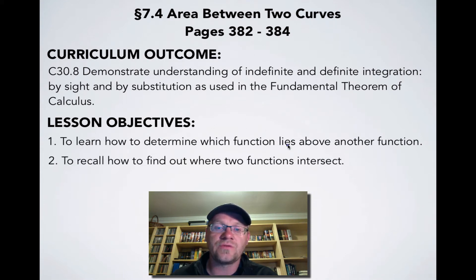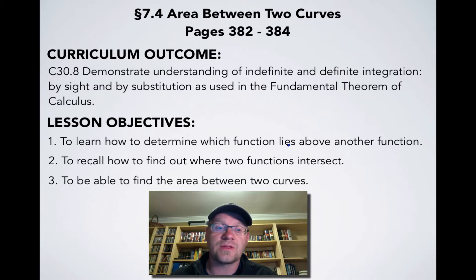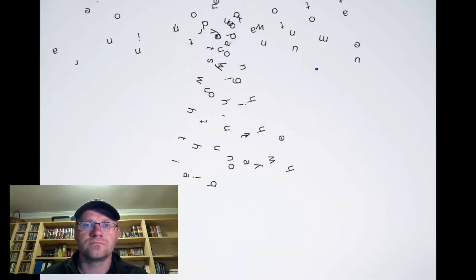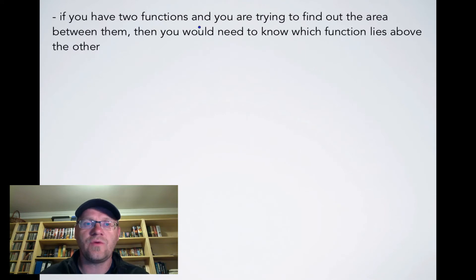Objective two: to recall how to find where two functions intersect. Objective three: to be able to find the area between two curves. So if you have two functions and you're trying to find the area between them, you need to know which function lies above the other.